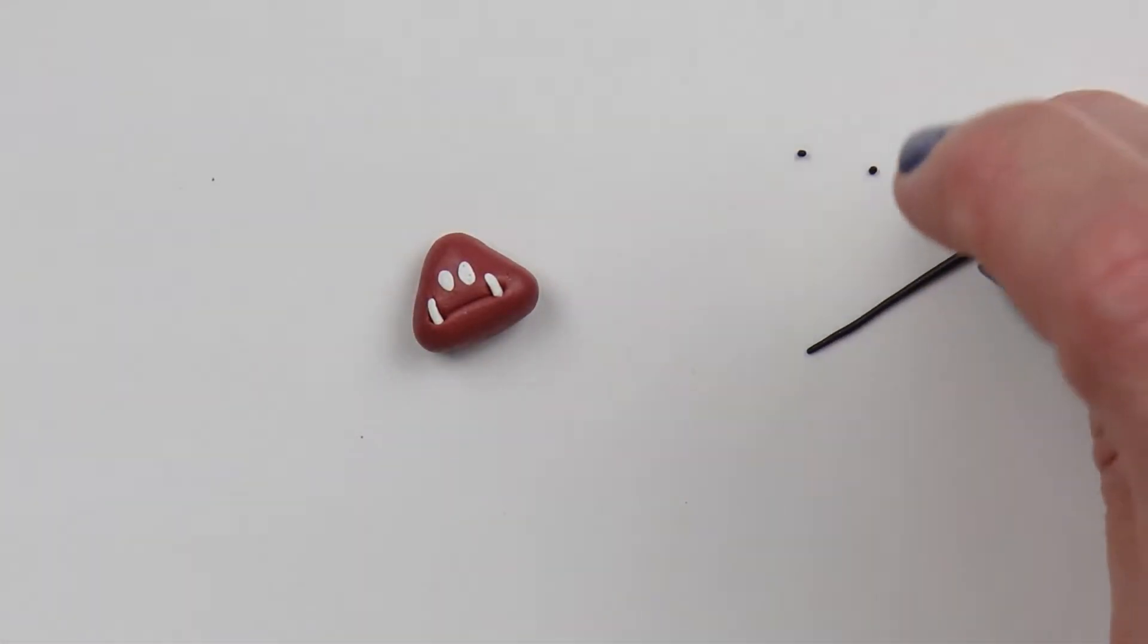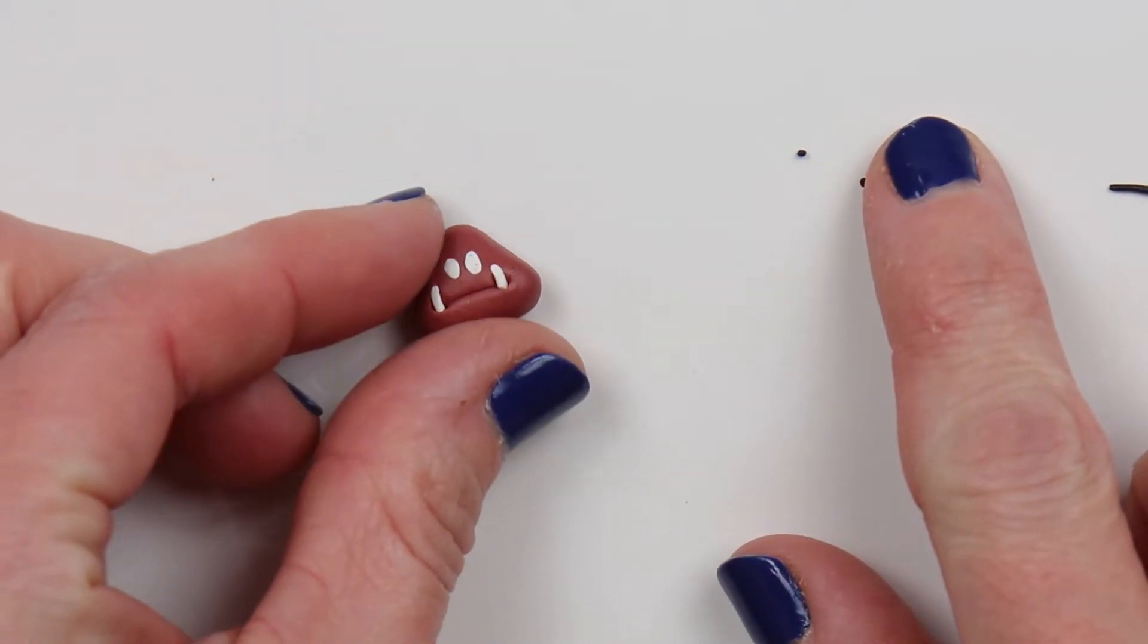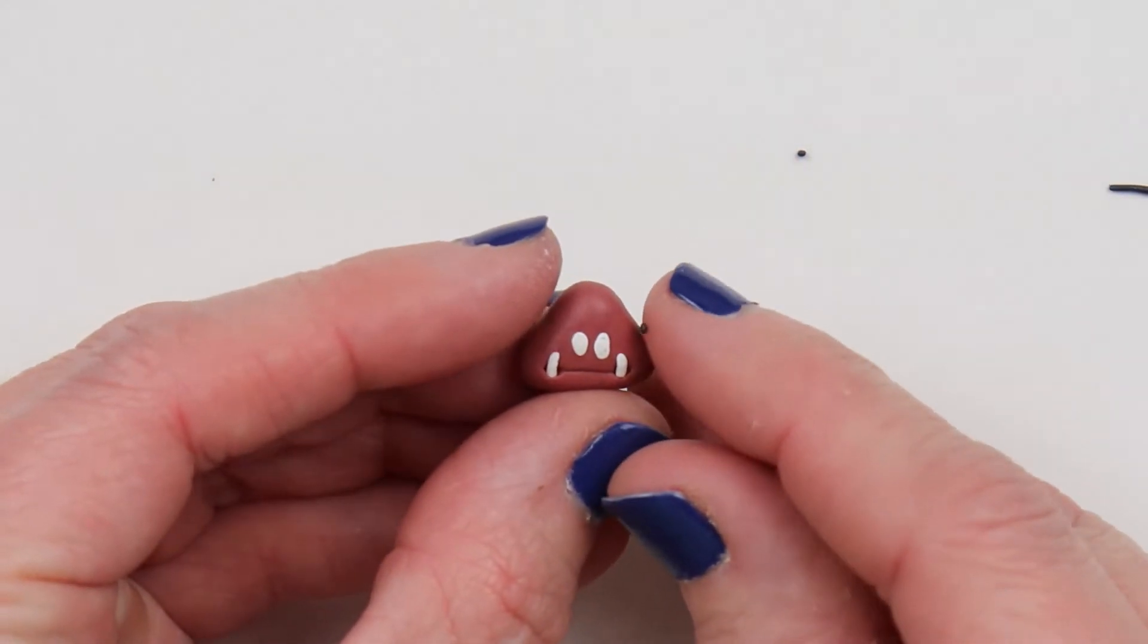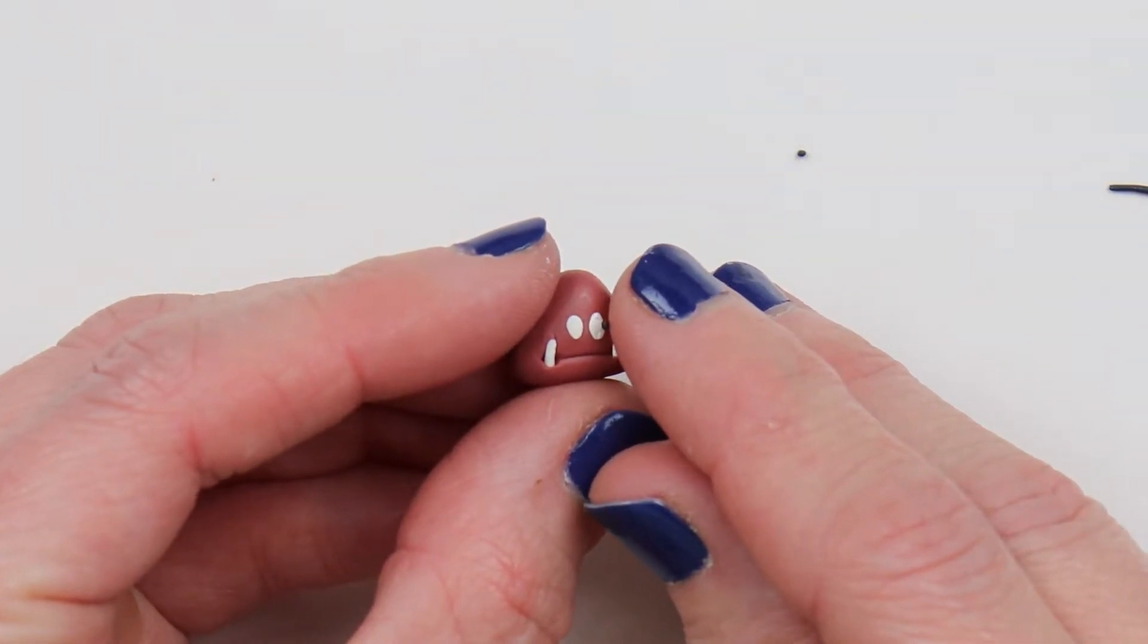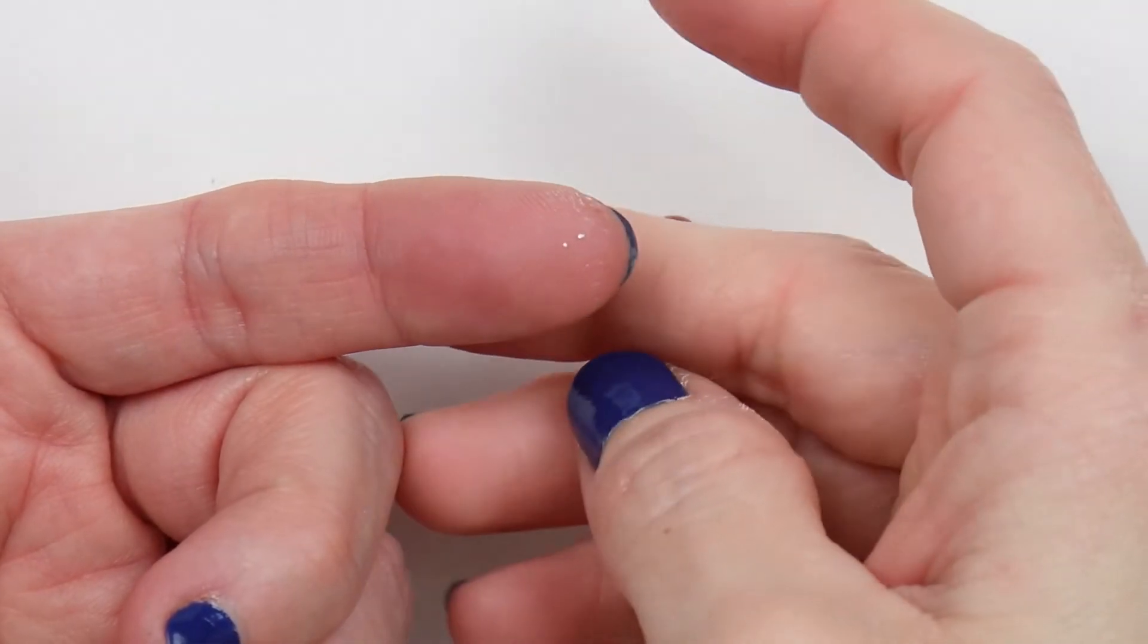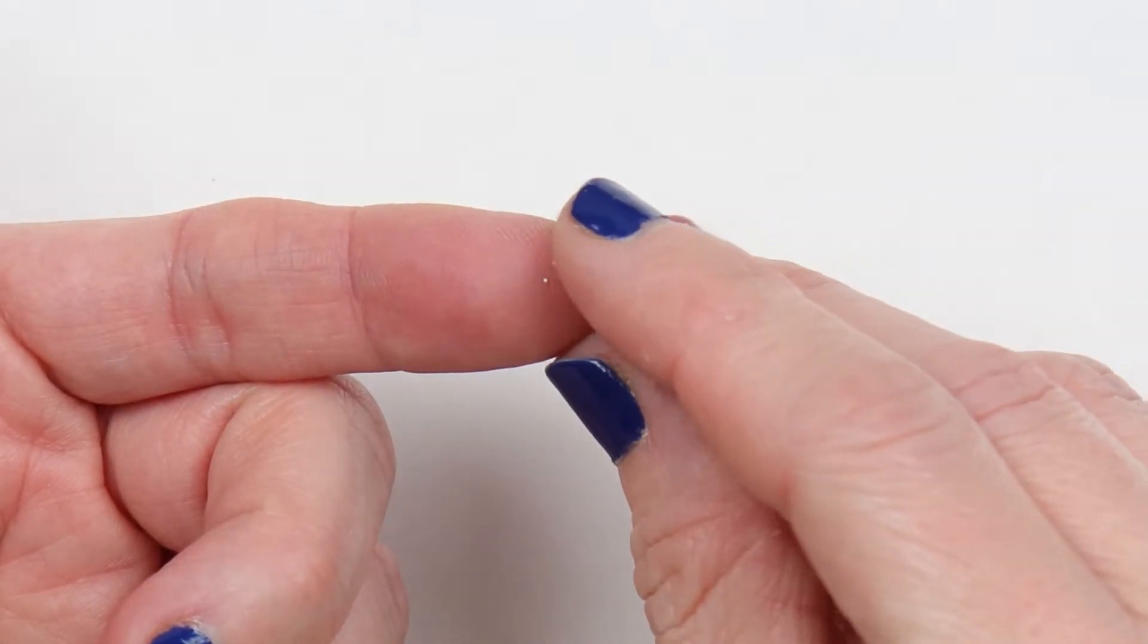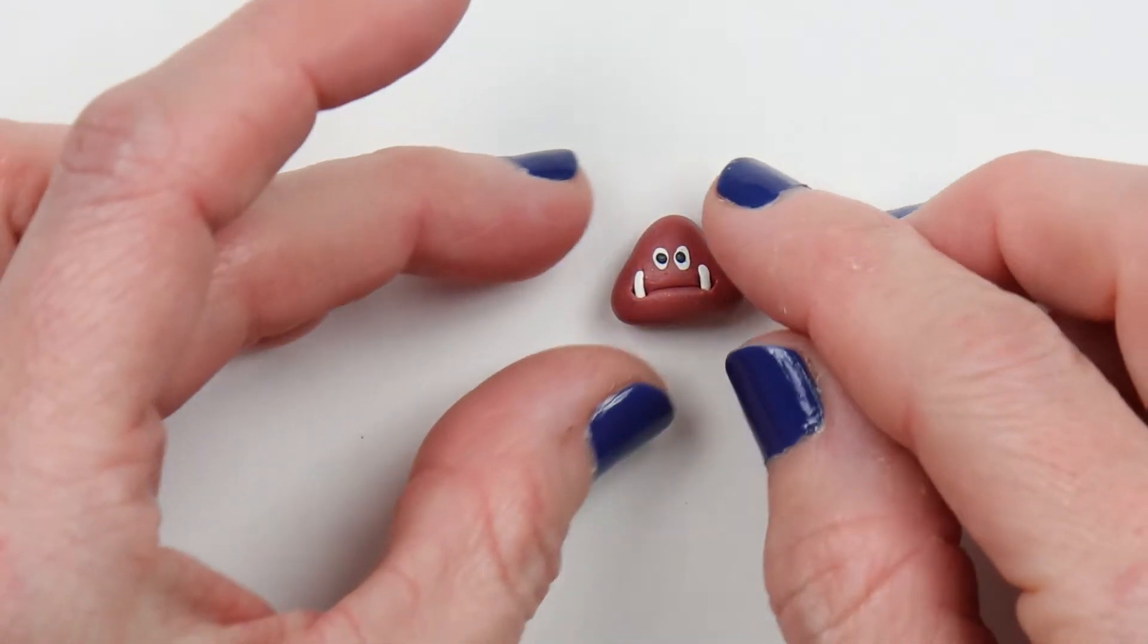And then roll out some thin black clay, and cut off the world's second smallest piece of clay ever. You'll need two of those. And then place these on the whites of the eye. And then roll out some white clay, and cut off the world's number one smallest piece of clay ever. And then place these on the black dots.